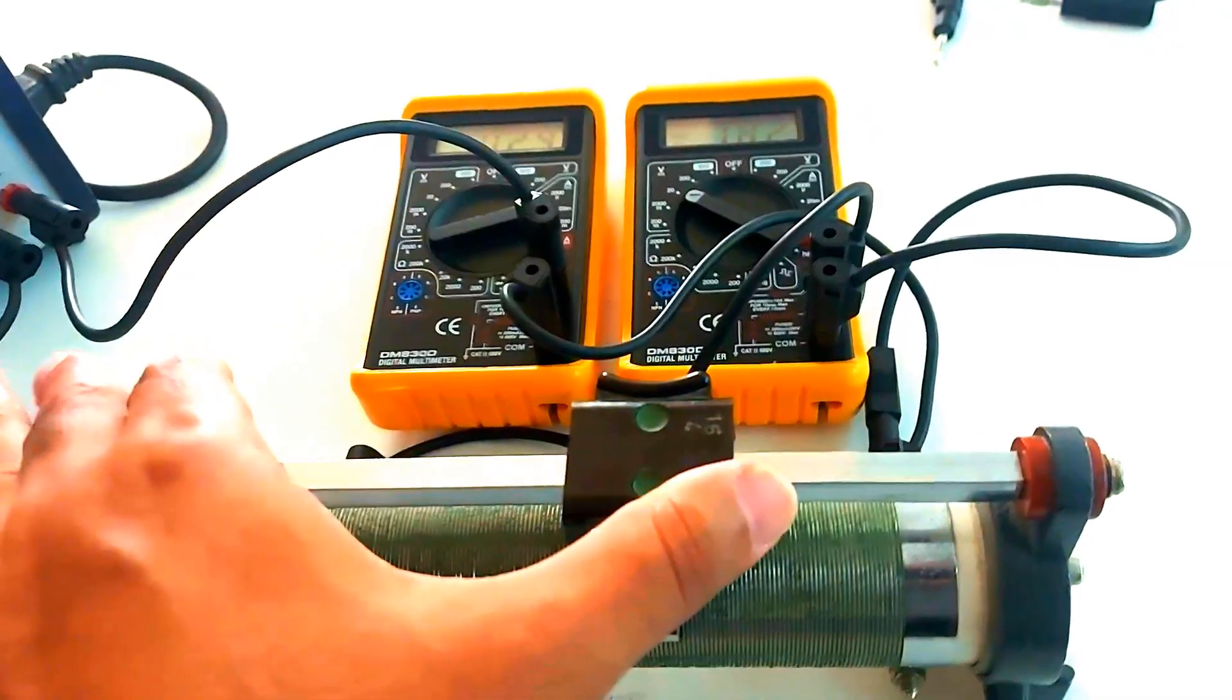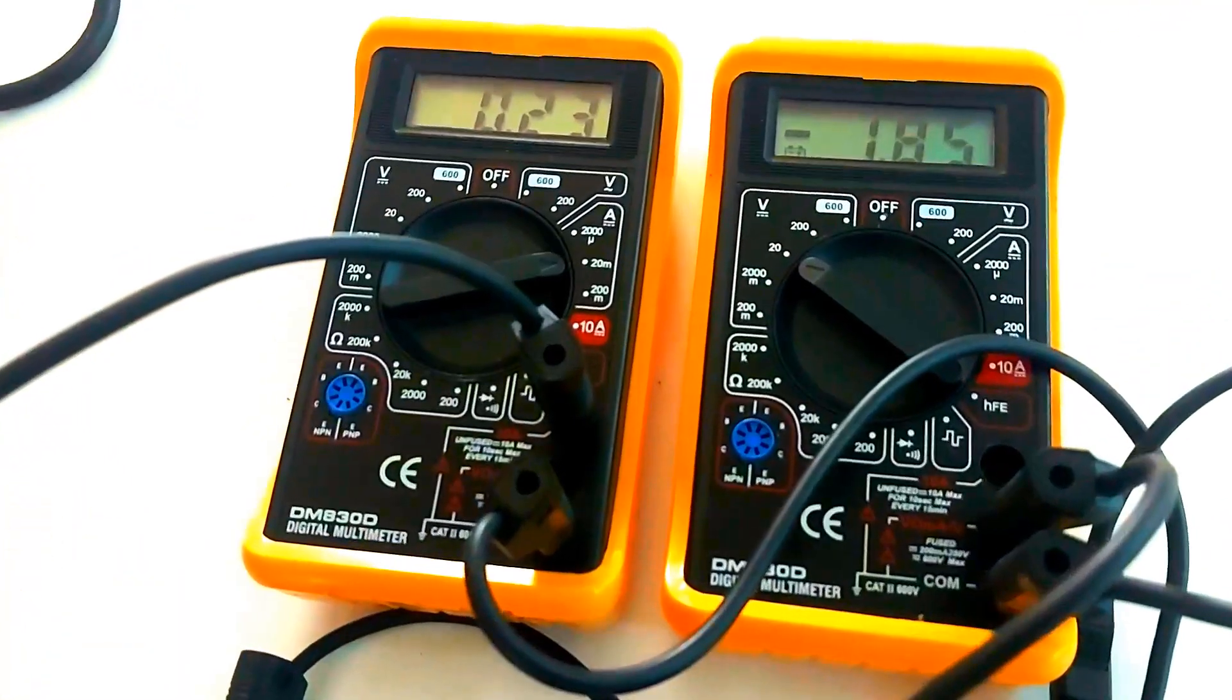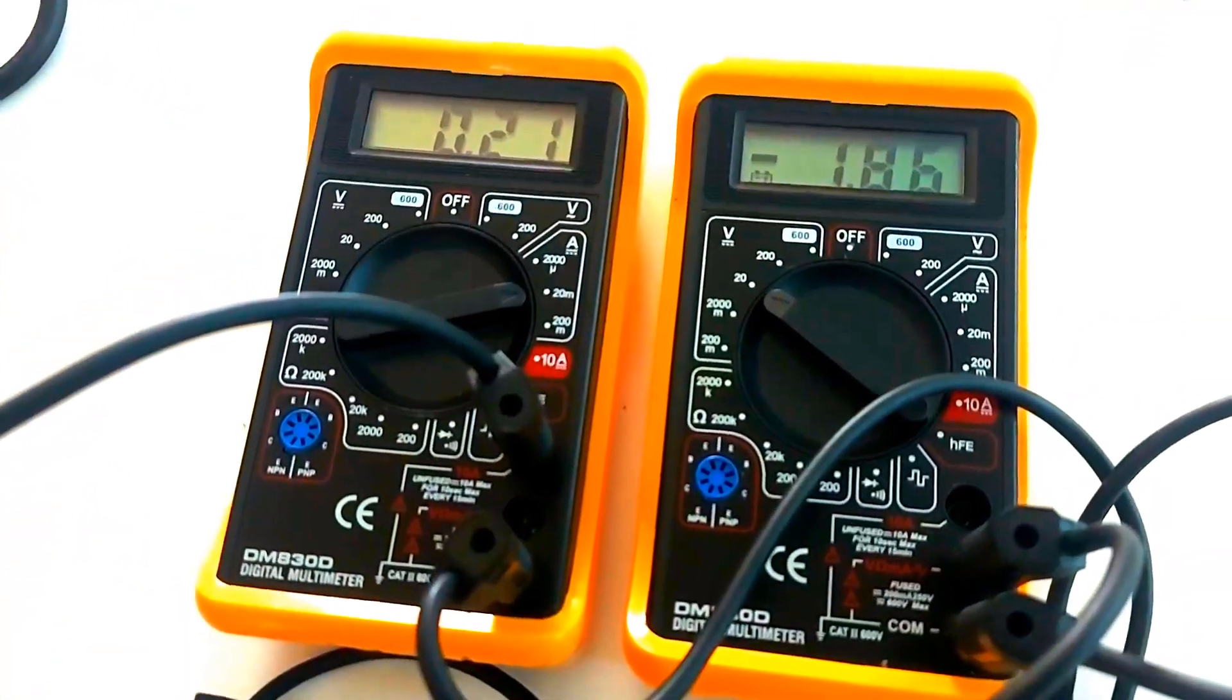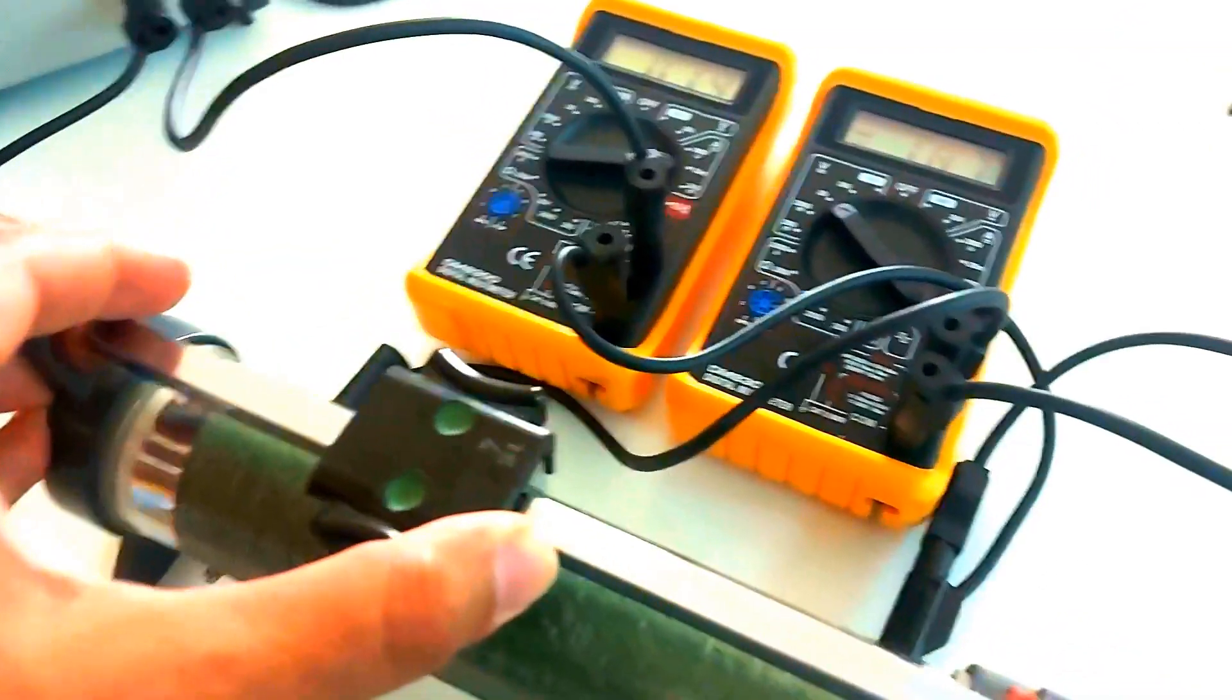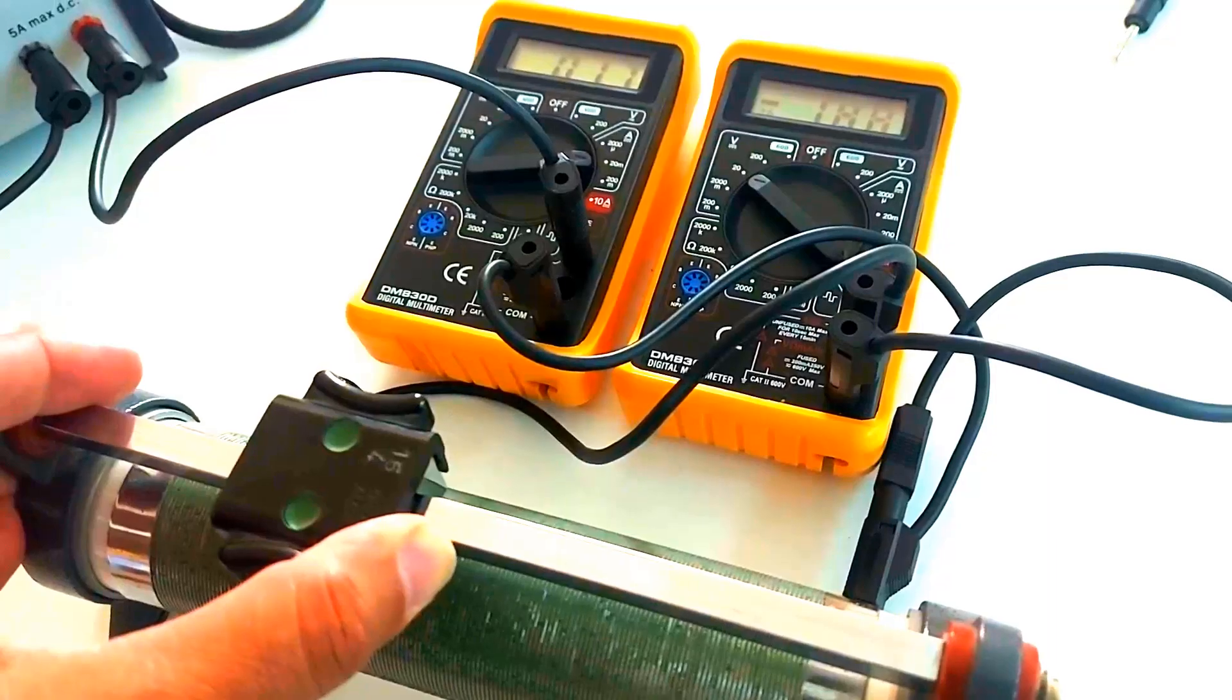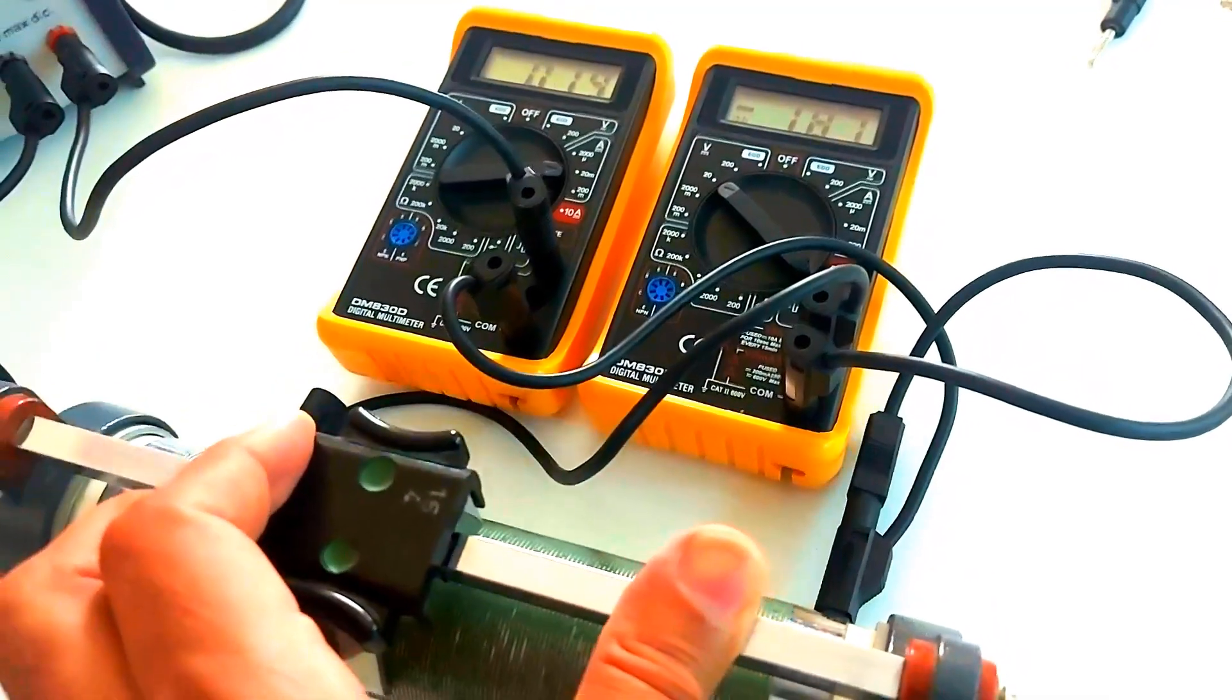What have we learned? The rheostat is an excellent tool for controlling both voltage and current in a circuit. By simply adjusting the sliding contact, we can vary resistance, making it perfect for dimming lights, adjusting motor speeds, and much more.